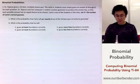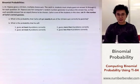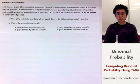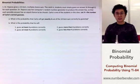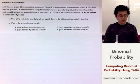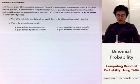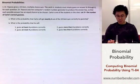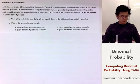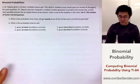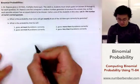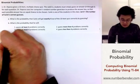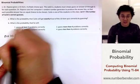Dr. Raposa gave a 10-item test with multiple choice answers from A through E, and we are supposed to compute for the probability of getting correct answers by just guessing. For the first problem, we're supposed to find the probability that Carlo, who's taking the test, will get exactly 4 out of the 10 problems correctly. So first, let's organize the given values. We know that the number of trials here will be 10 because it's a 10-item quiz.